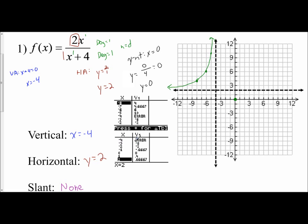Now let's look at the points to the right of the vertical asymptote. At x equals negative 3, y is negative 6; at x equals negative 2, y is negative 2; I already have (0, 0); and at x equals 2, y is 2/3. Starting from the y-intercept, the graph curves down, approaches the vertical asymptote but never crosses it, then comes up and curves, approaching the horizontal asymptote but never crossing it. And there's the graph of my rational function.